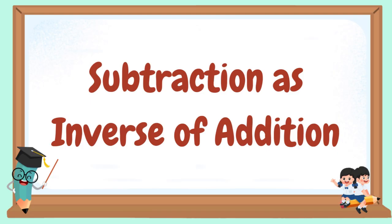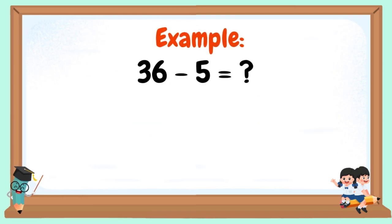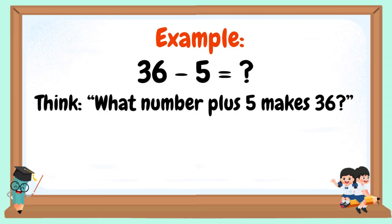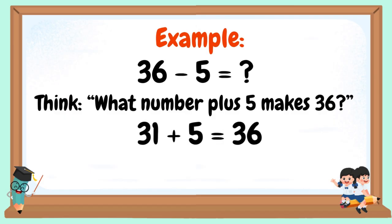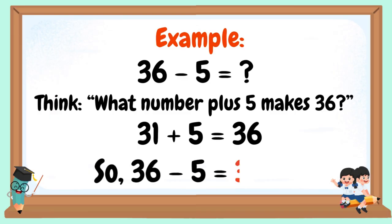Subtraction as inverse of addition. 36 minus 5 equals — think: what number plus 5 makes 36? 31 plus 5 equals 36. So 36 minus 5 equals 31.